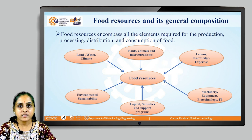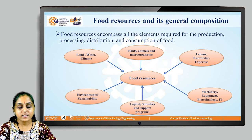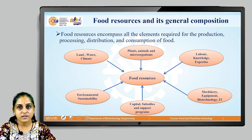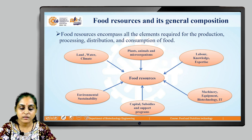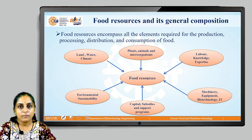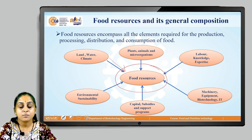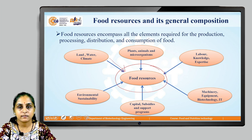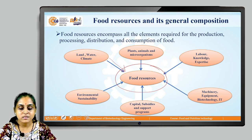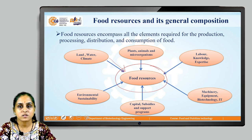Let us now understand food resources and their general composition. Food resources encompass all elements required for the production, nutrition, processing, distribution, and consumption of food. As shown in the diagram, food resources are influenced by land, water, and climate. The primary food resources are plants, animals, and microorganisms.